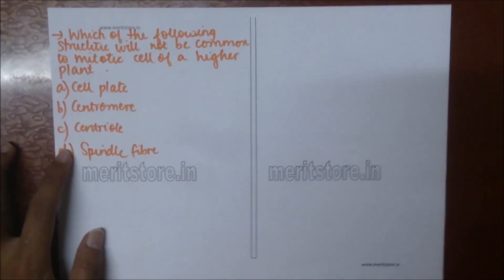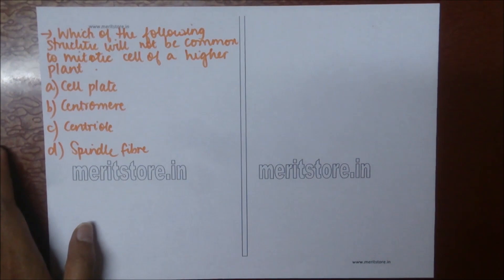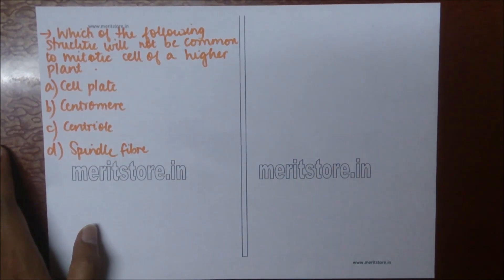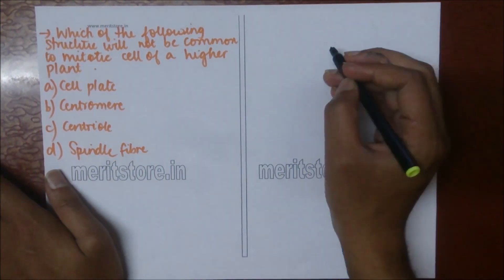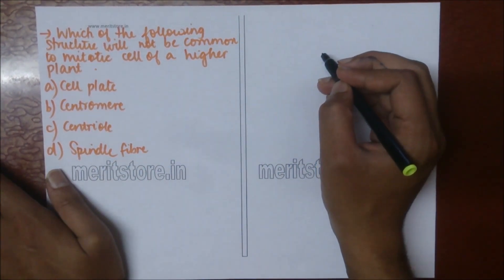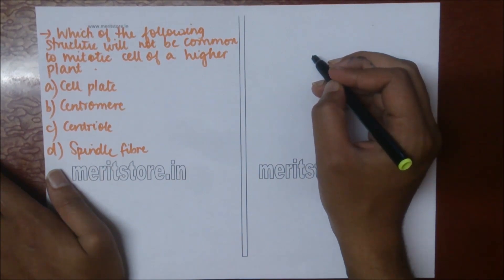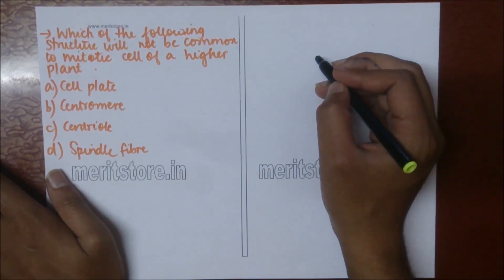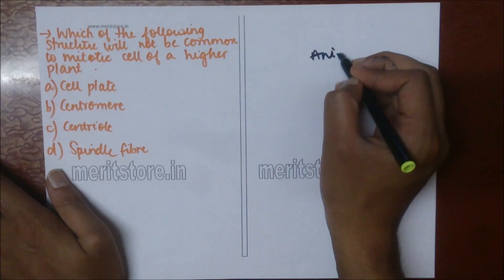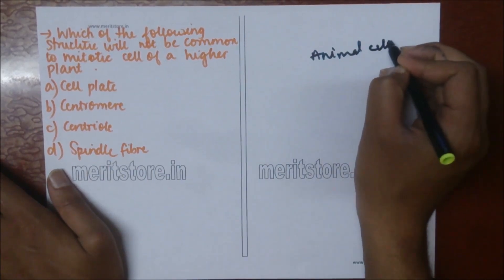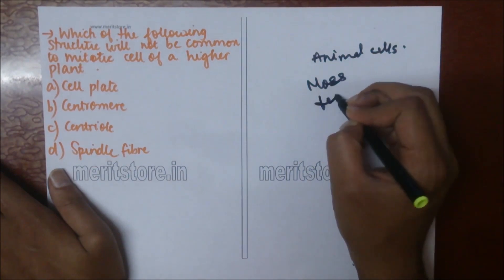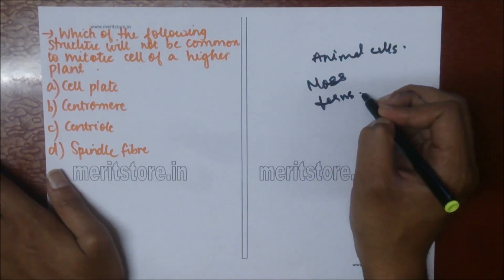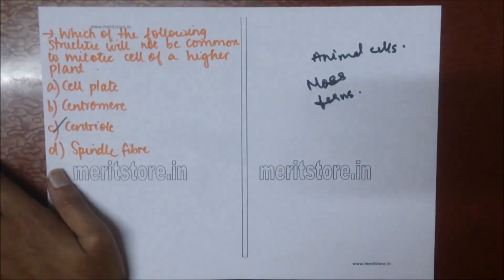The following structure will not be common to a mitotic cell of a higher plant: A) cell plate, B) centromere, C) centriole, D) spindle fiber. Centrioles are organelles important in spindle formation during nuclear division. They are found commonly in animal cells and some lower plants like mosses and ferns, but are not present in all plant cells. So option C is the correct answer.